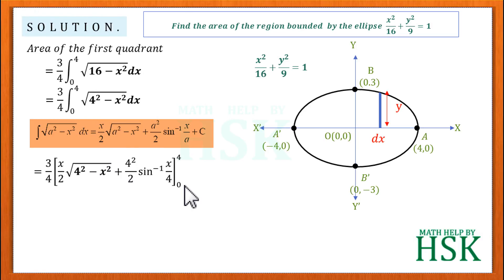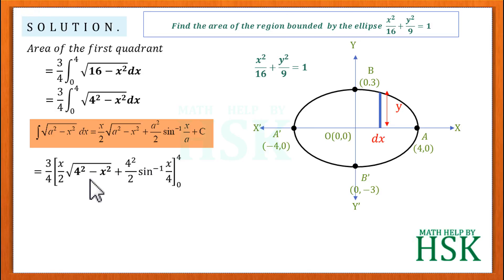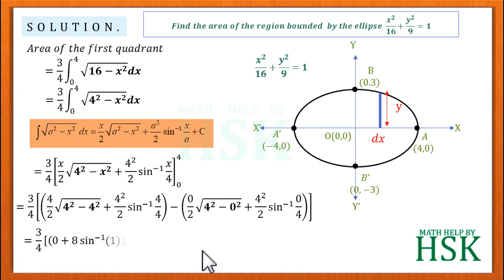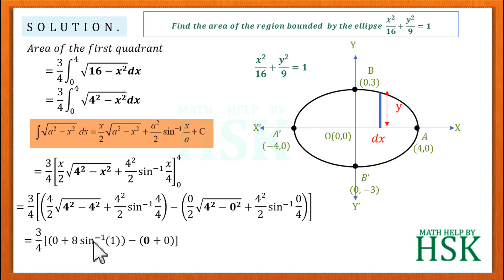Placing the upper limit x = 4: the term x/2 · √(16 − x²) becomes 0, and sin⁻¹(4/4) = sin⁻¹(1) = π/2. Placing x = 0: both terms become 0. So the expression simplifies to (3/4) × [8 · sin⁻¹(1)] = (3/4) × 8 × π/2. The 4s cancel, giving an area of 3π for the first quadrant.